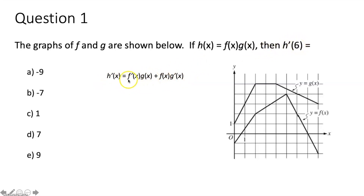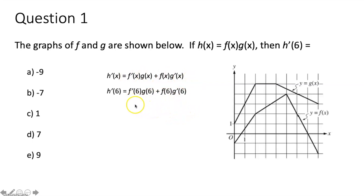All we have to do is plug in six for each of our x's and evaluate each term individually. So f prime of six — it wants you to find the slope of the function f at x equals six.